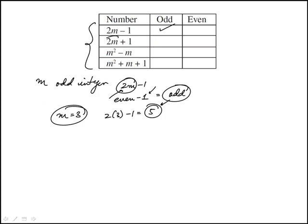So same thing, 2m plus 1. Again, 2m is even, plus 1 is odd. You can also do m is 3. This would be 2 times 3 plus 1.